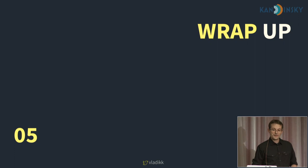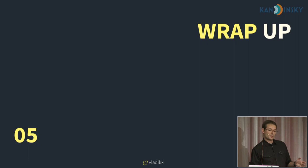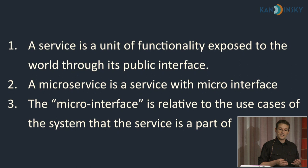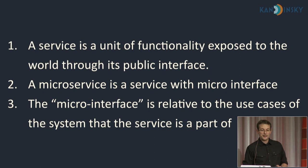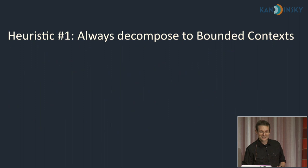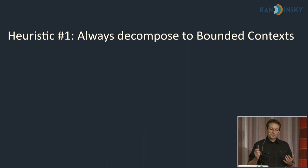Those are the ten design heuristics. Quick recap: a service is a unit of functionality exposed through its public interface — its front door. A microservice is a service with a micro-interface. The size of the micro-interface is not absolute; it depends on the use cases of the overarching system. Our goal is to reduce the global complexity of the system — the interconnectedness of its components. The minimal decomposition level is bounded contexts; always decompose to bounded contexts and do not implement conflicting models in the same codebase.